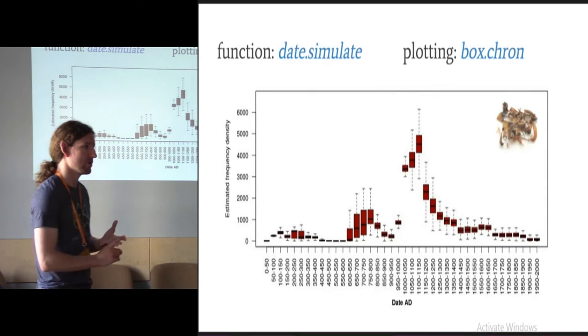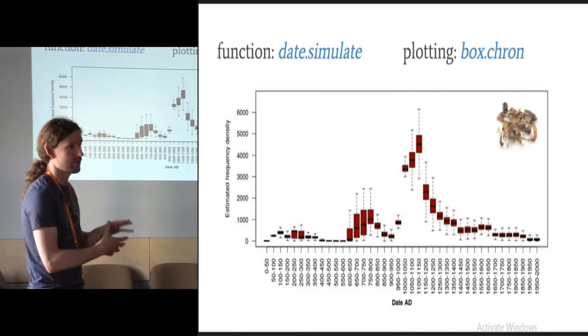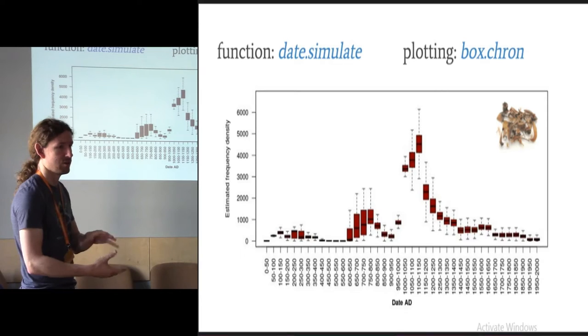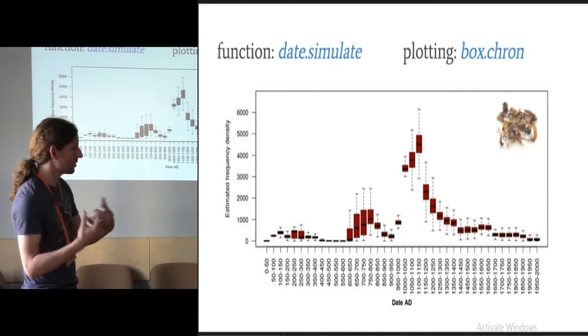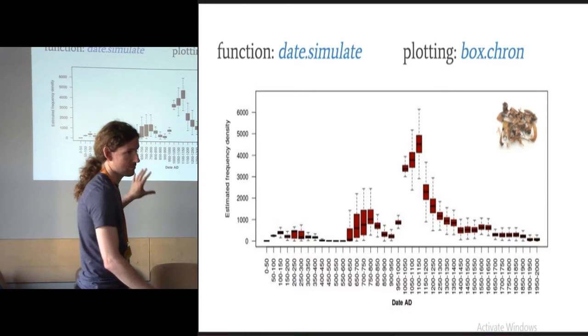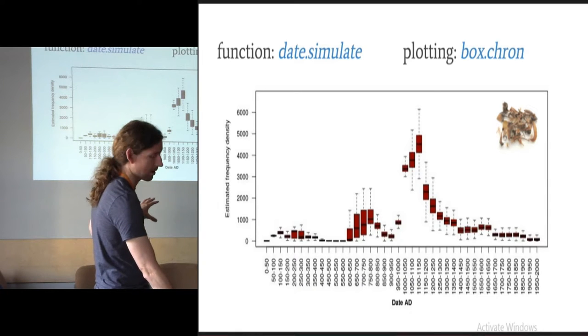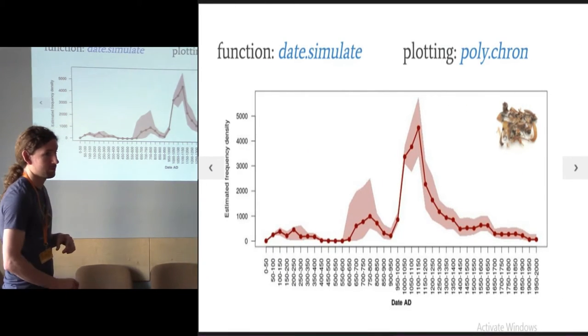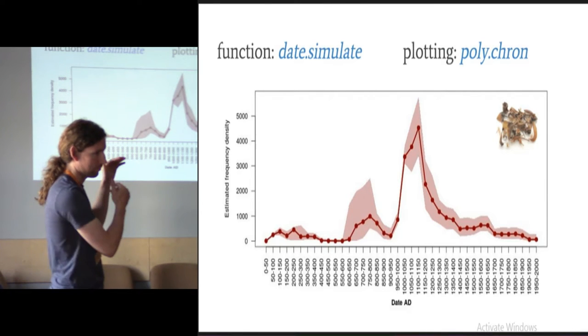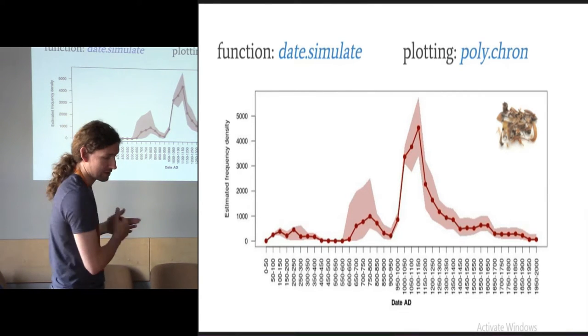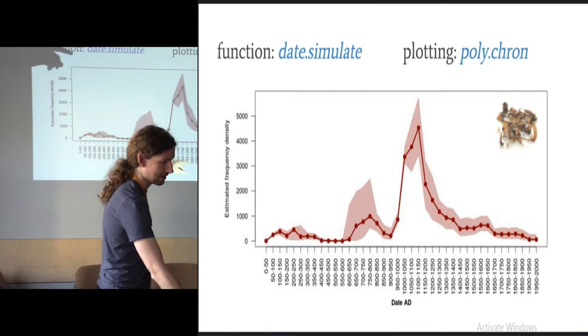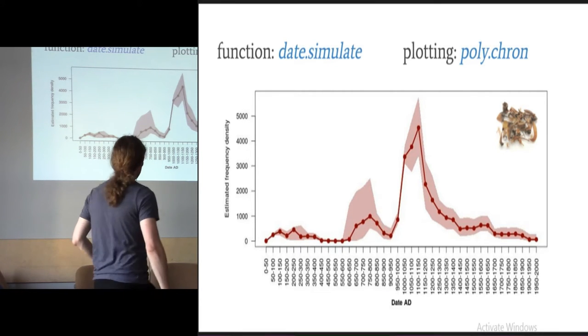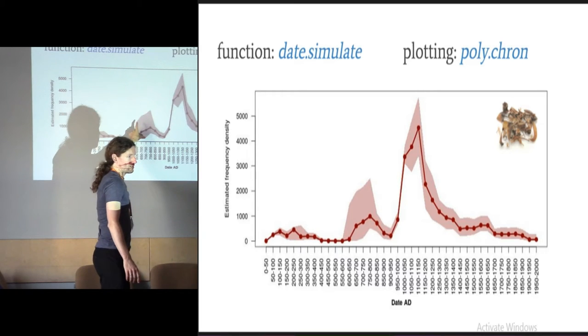This is the equivalent date simulator. There are three different functions for plotting the results. You run a function for the date simulator and it gives you a particular output type, which then you can feed into one of these three plotting functions. This is default. It's just a very thin veneer over the basic R box plot. This is my favourite one. Plots it to polygon. You can specify what confidence intervals you want. 95% is the default with the medians down the middle.